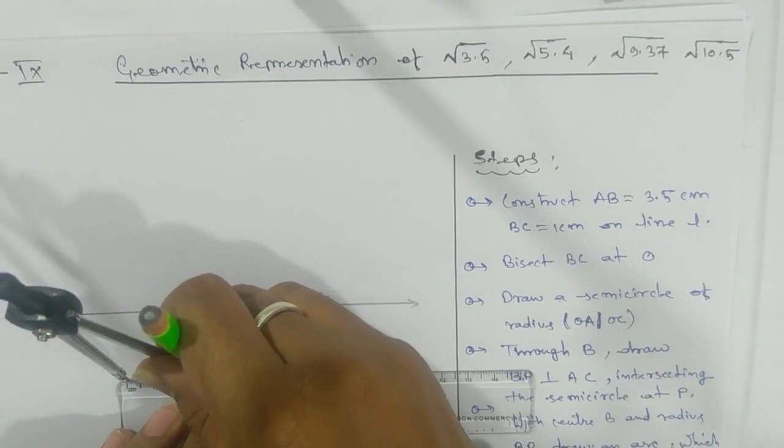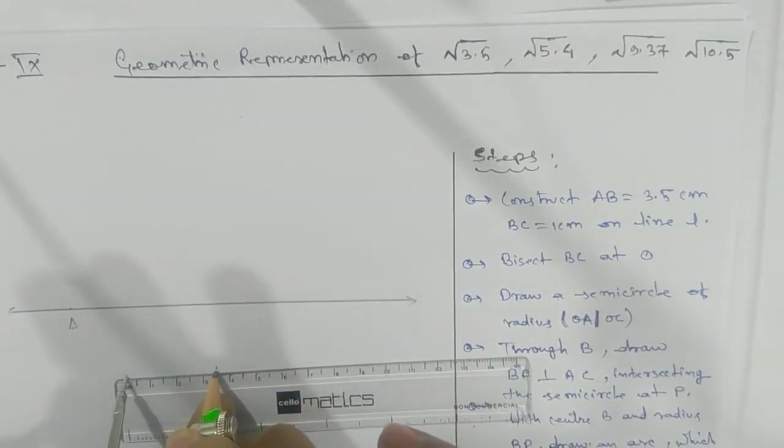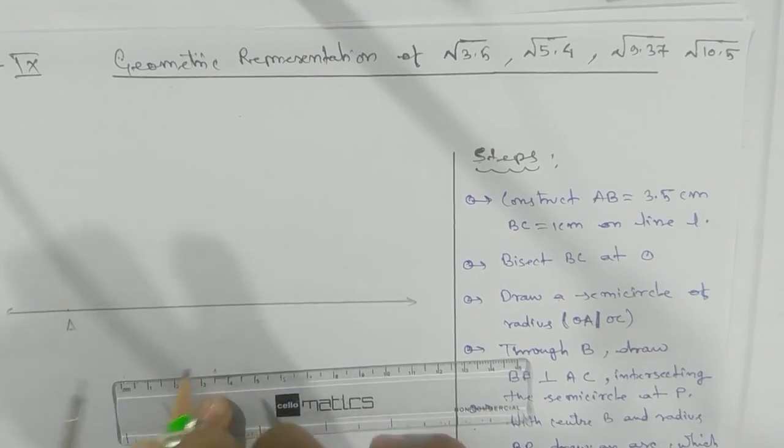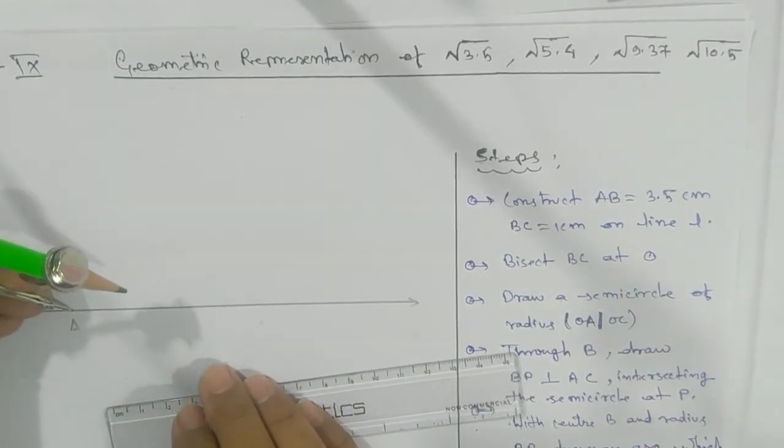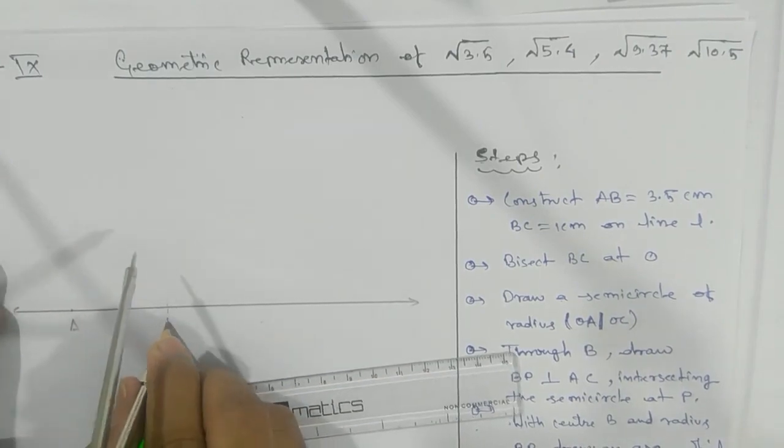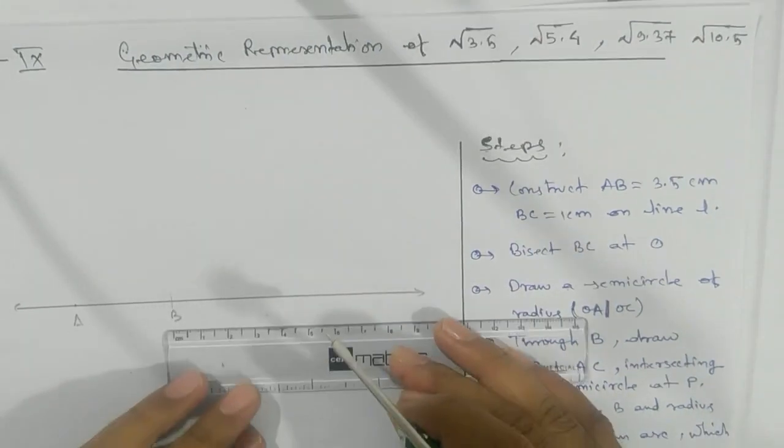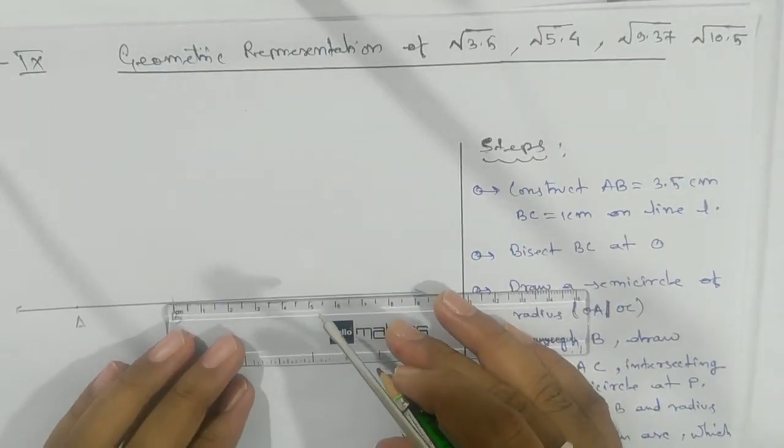And then take one unit BC. So here you can see this is your one unit - this is your 1. So you can mark this as your C. Okay, next is to bisect AC.